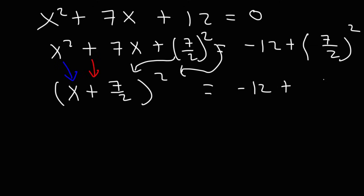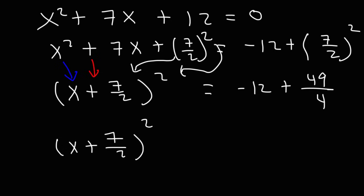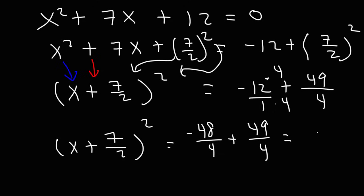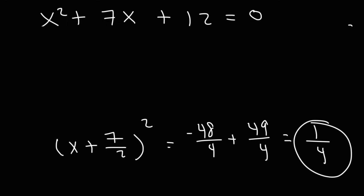On the right side, 7 squared, or 7 times 7, is 49, and 2 squared is 4. So what we need to do is add negative 12 plus 49 over 4. Let's put this over 1. In order to add those two fractions, we need to get common denominators, so we're going to multiply negative 12 and 1 by 4. This gives us negative 48 over 4 — which is still equivalent to 12 — plus 49 over 4. Negative 48 plus 49 is equal to positive 1, so we get 1 over 4. So right now we have x plus 7 over 2 squared equals 1 over 4.